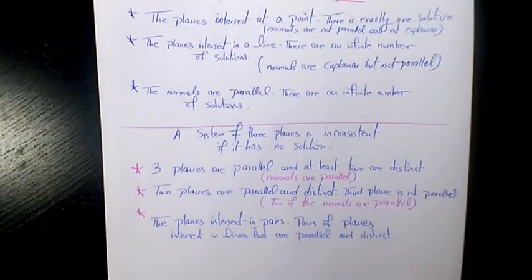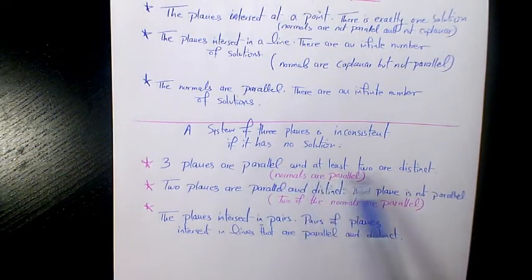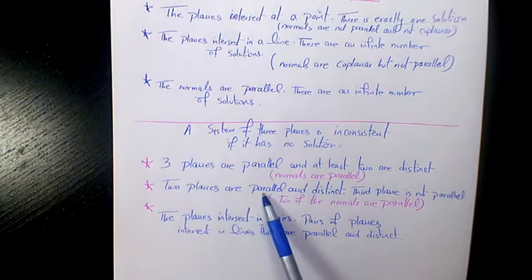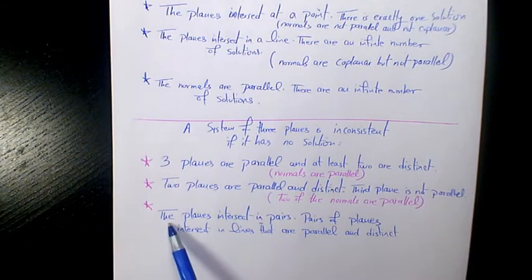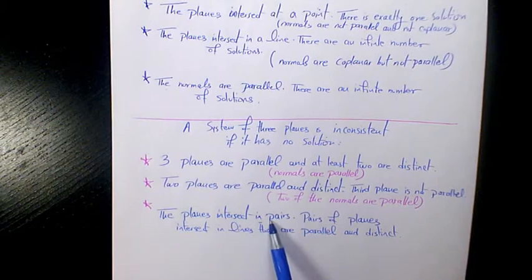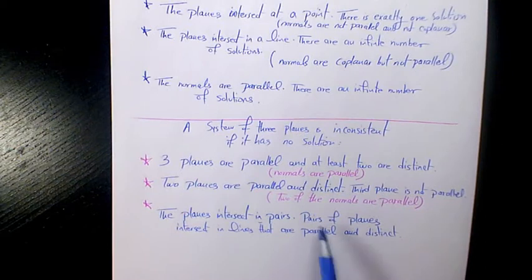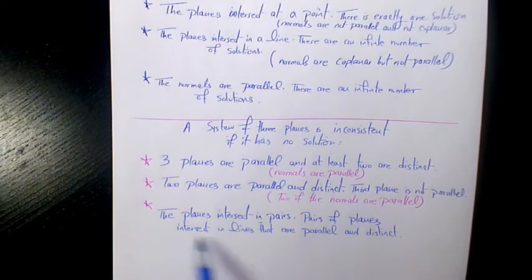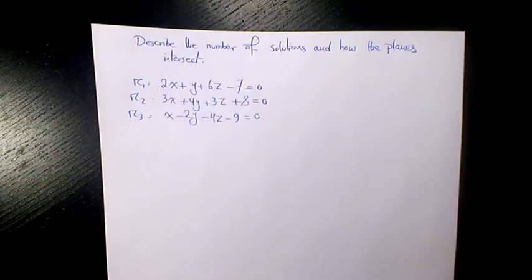Now let's talk about inconsistent planes, where there is no solution. Case one: all three planes are parallel and at least two are distinct, normals are parallel. Case two: two planes are parallel and distinct, but the third plane is not parallel — it crosses the two planes. Case three: the planes intersect in pairs, where each pair intersects in a line but those lines are parallel and distinct, giving three parallel lines total. These are the three inconsistent cases for three planes.